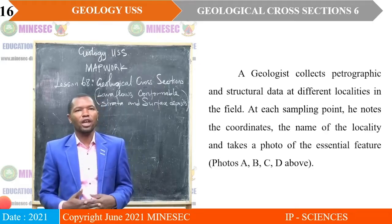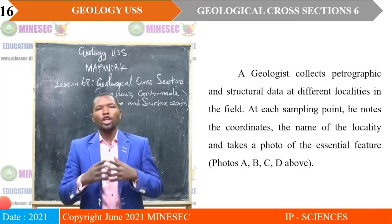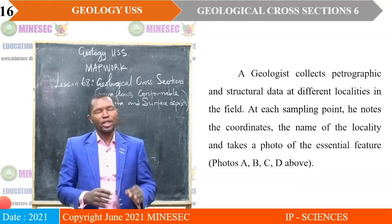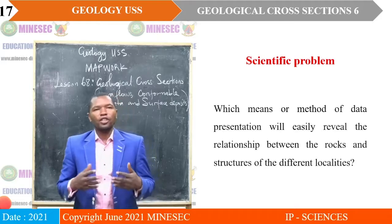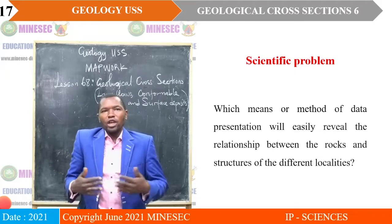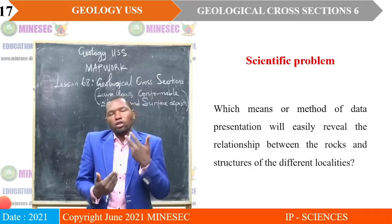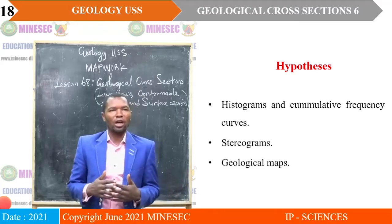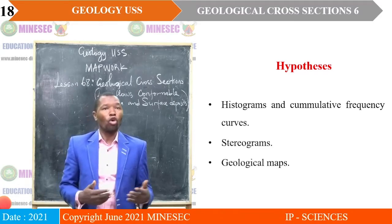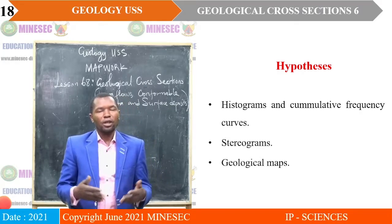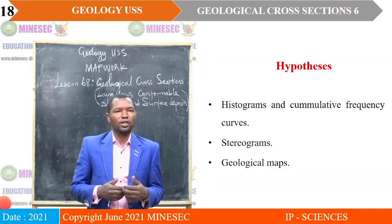A geologist collects petrographic and structural data at different localities in the field. At each sampling point, he notes the coordinates, the name of the locality, and takes a photo of the essential feature. Which method of data presentation will easily reveal the relationship between the rocks and the structures of the different localities collected during fieldwork? Can histograms and cumulative frequency curves do that? Will stereograms be able to do it, or can it be done using geological maps?